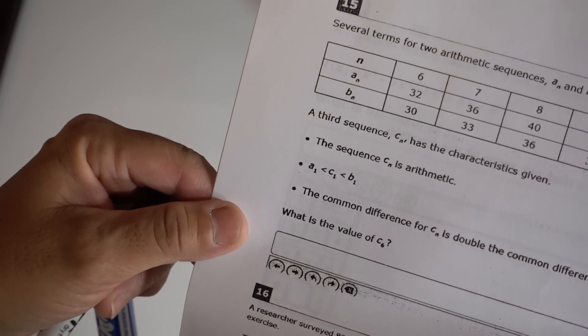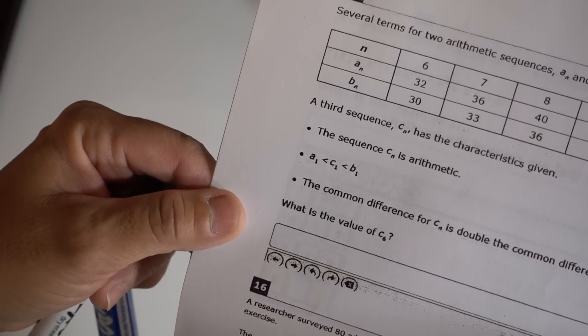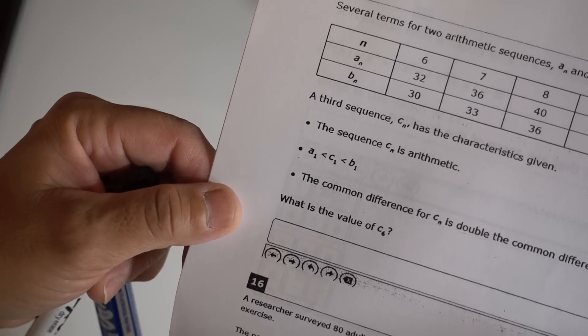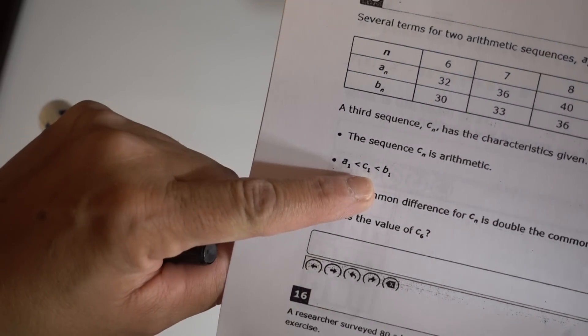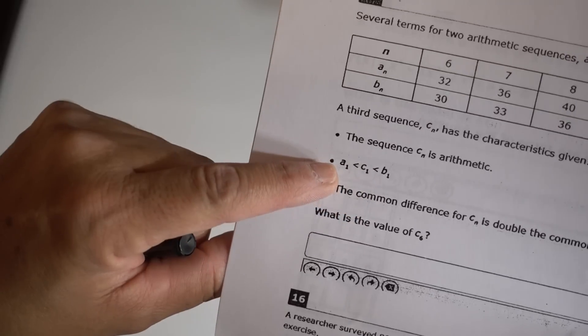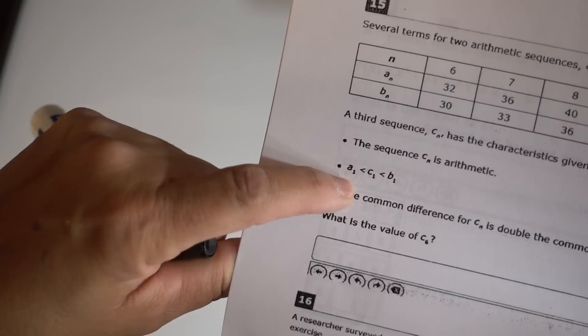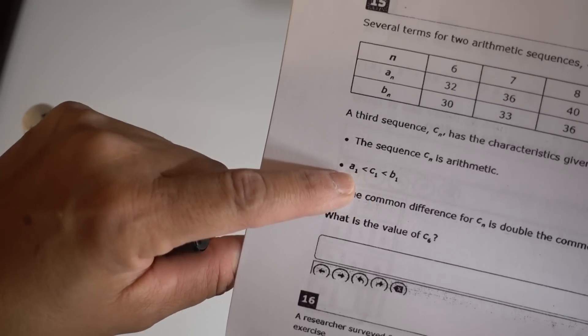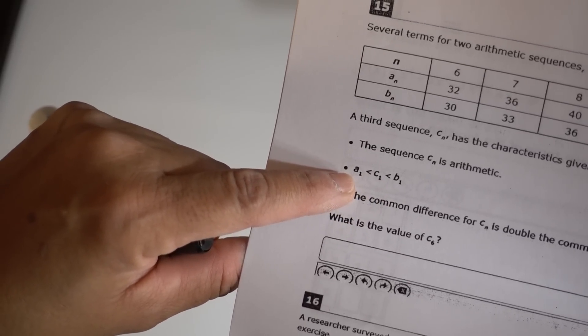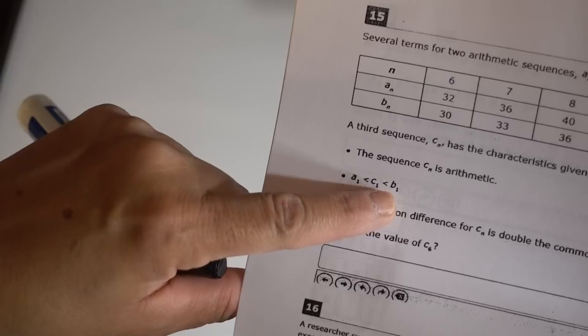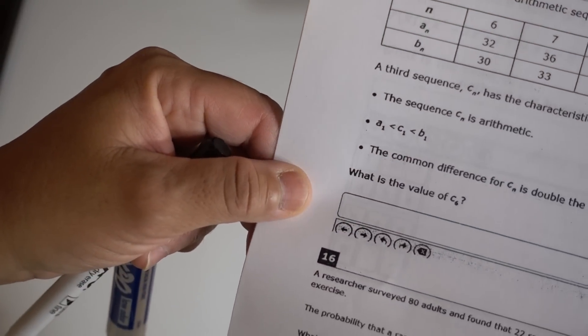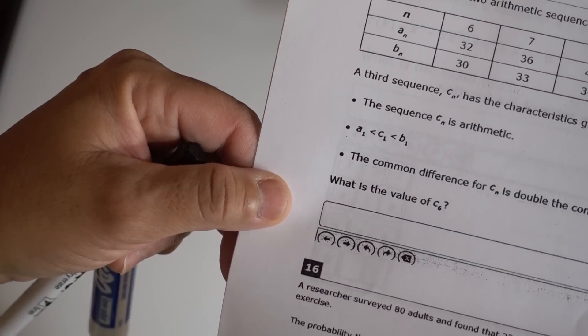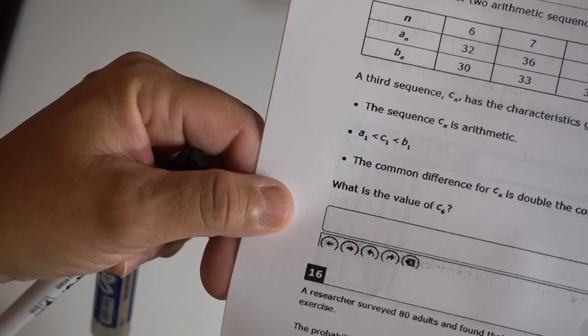A third sequence c_n has the characteristics given. The sequence c_n is arithmetic as well. The first term of c_n is between a_1 and b_1, in other words greater than a_1 and less than b_1. The common difference of c_n is double the common difference of b_n. What is the value of c_6?